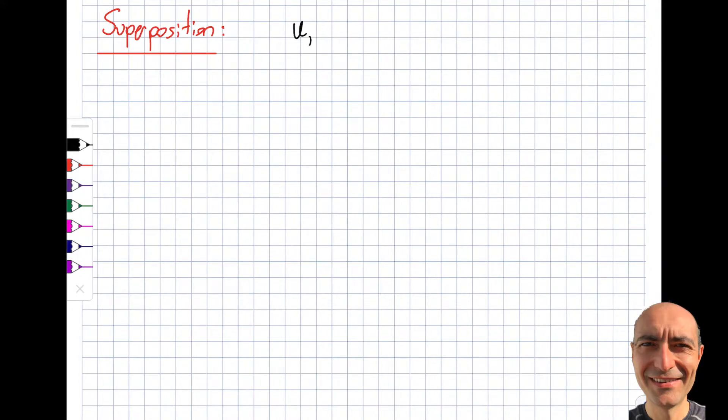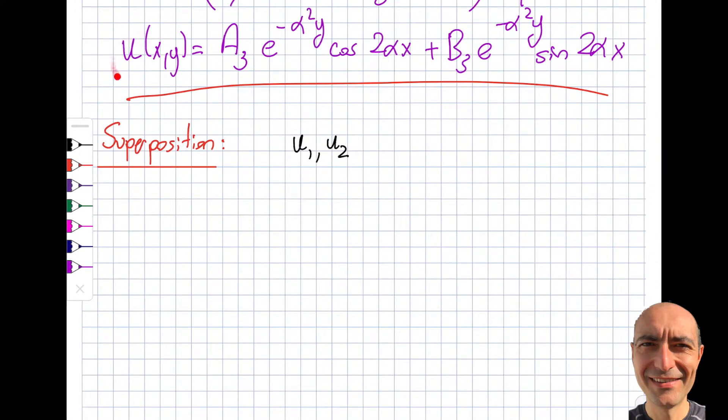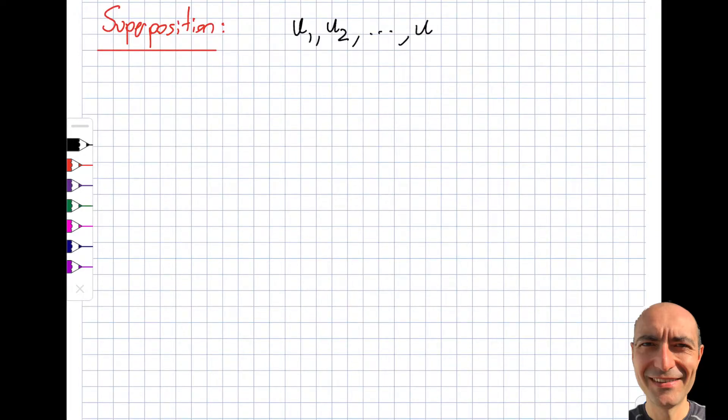If u1, u2, and let's say I have k solutions uk are solutions to homogeneous linear PDE, then my u will be equal to c1*u1 plus c2*u2 and all the way plus ck*uk is also a solution.